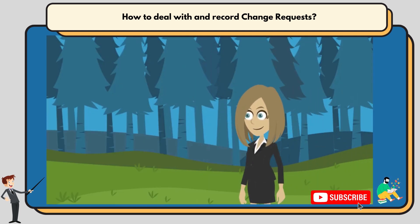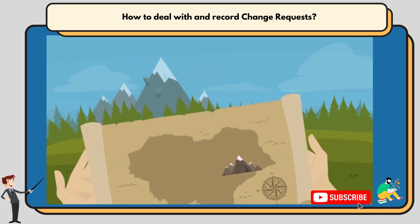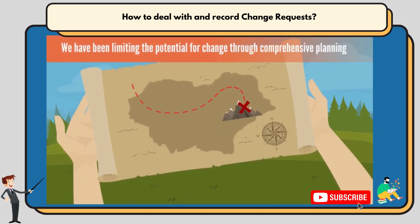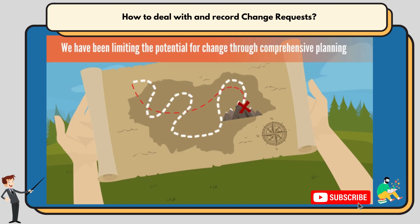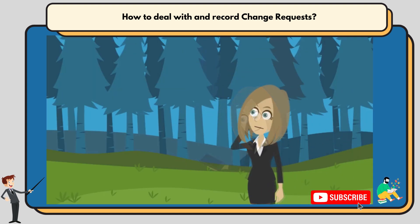Now let's discuss. First is what we've been doing in the course so far: limiting the potential for change through comprehensive planning. By using the methods we've been discussing, any project manager will miss fewer details in the execution phase and therefore will not need to make any changes. If they do need to make changes, a project manager should implement a change control process.